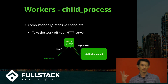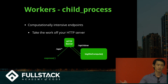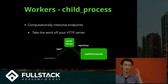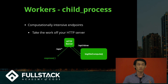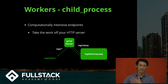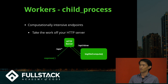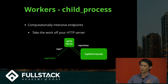The second bottleneck is computationally expensive endpoints — some huge calculation that might not even be frequently hit in your API, but once it's hit it slows everything down behind it and holds up everything on your server if you have the compute on your HTTP server, in the naive case.